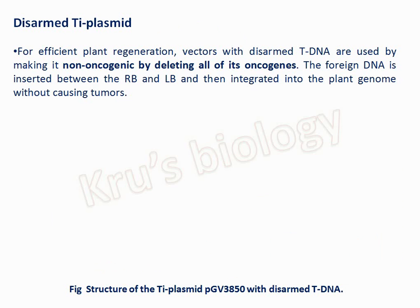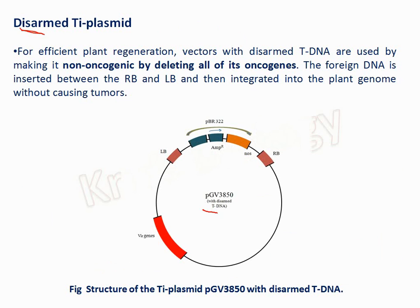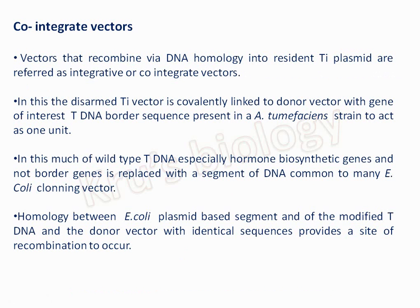There is a modification made to the Ti plasmid by deleting the oncogenes responsible for tumor formation, making it non-oncogenic — this is called the disarmed Ti plasmid. Into this disarmed plasmid we can add the gene of our interest, which then integrates into the plant genome without causing tumors.